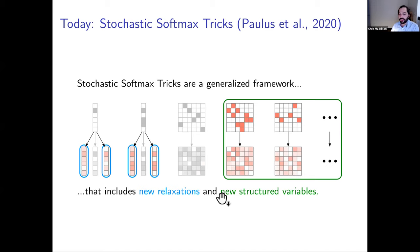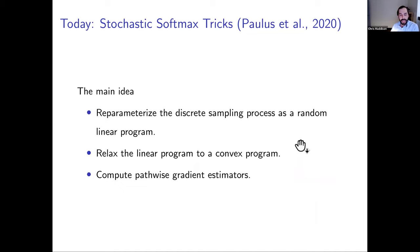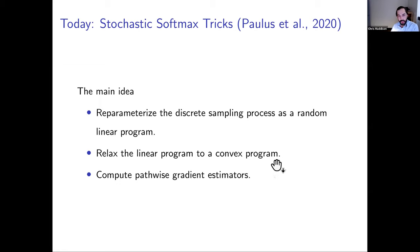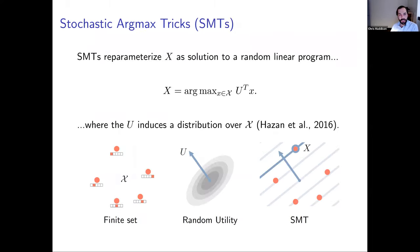But there hasn't been a coherent framework to capture these relaxations and this technique for training discrete structured latent variable models. The paper I'm going to talk about today — published at NeurIPS 2020 — is called Stochastic Softmax Tricks. Stochastic Softmax Tricks are a generalized framework that generalize the Gumbel softmax and some of the estimators mentioned. They include new relaxations and are a coherent framework for generating relaxations for new structured combinatorial objects. The main idea is to re-parameterize the discrete sampling process as a random linear program, then relax the linear program to a strongly convex program which creates the softening of the random variable and allows computation of pathwise gradient estimators.